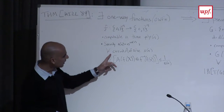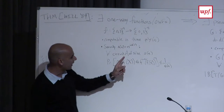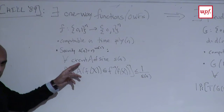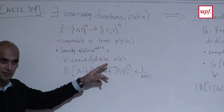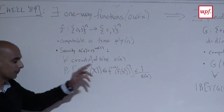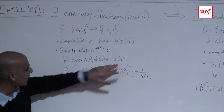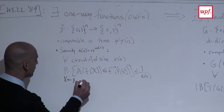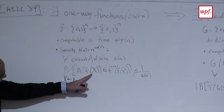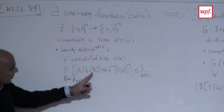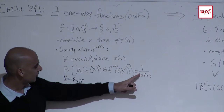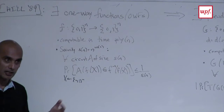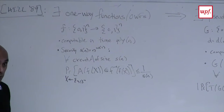The one-way function should be computable in polynomial time but hard to invert by algorithms running in arbitrarily large polynomial time — equivalently, it has some security as a function of n that grows faster than any polynomial. The security says that for any algorithm running in time s(n), when we pick a uniformly random input x and feed f(x) to the algorithm, the probability it finds a pre-image of f(x) is at most 1/s(n). Both the time and the reciprocal of the inversion probability are super-polynomial in n.